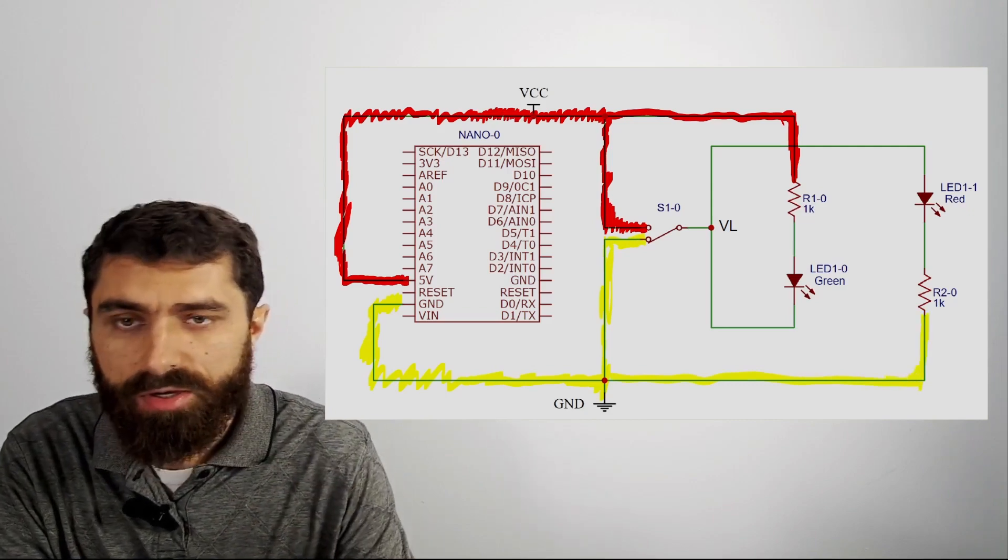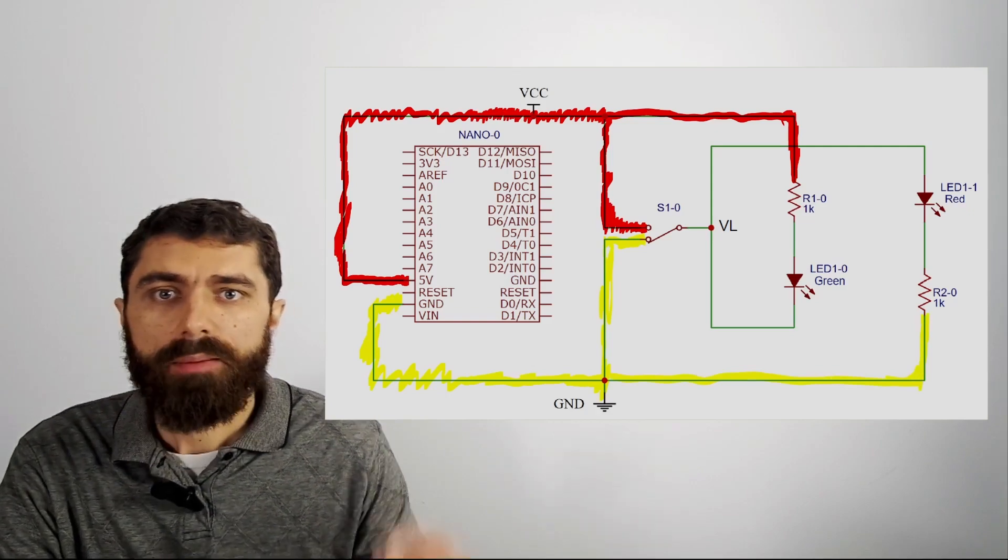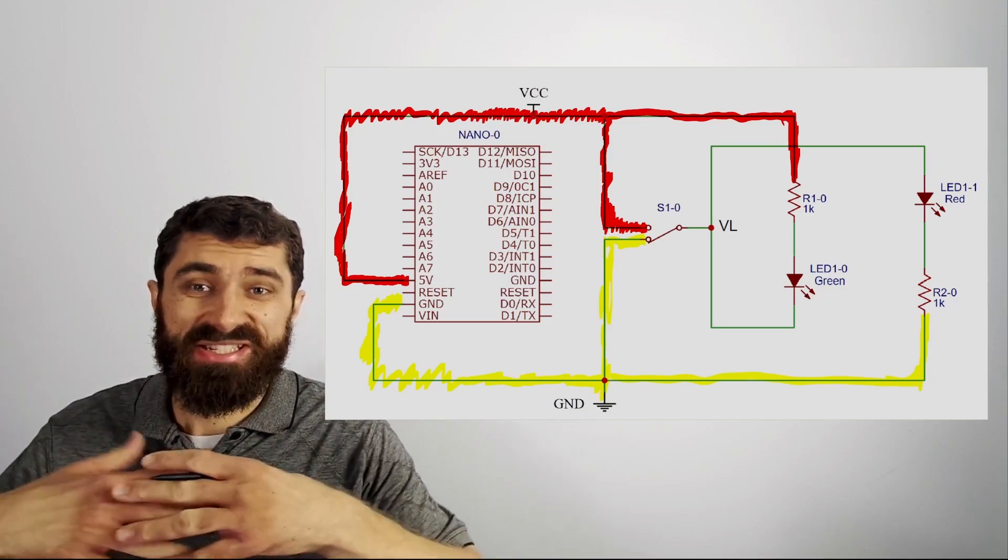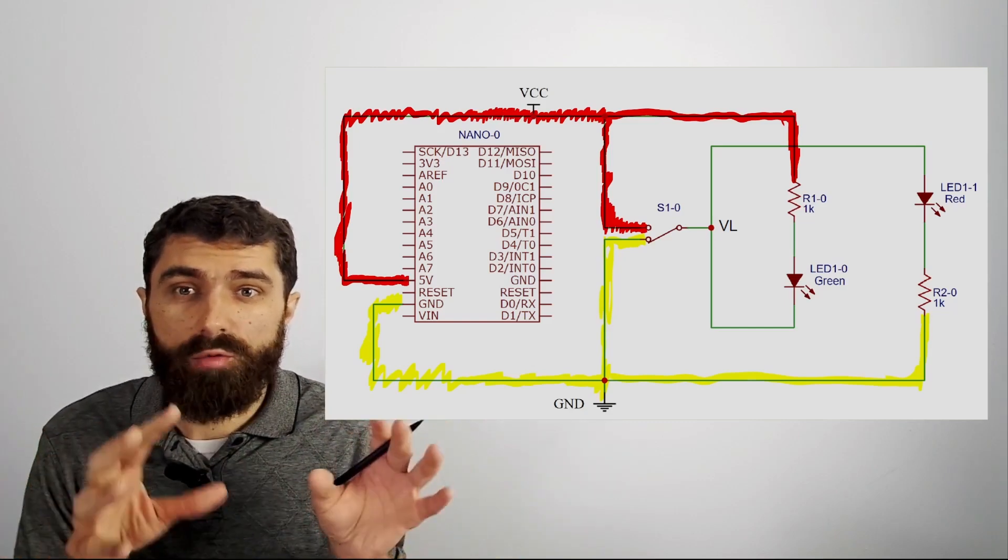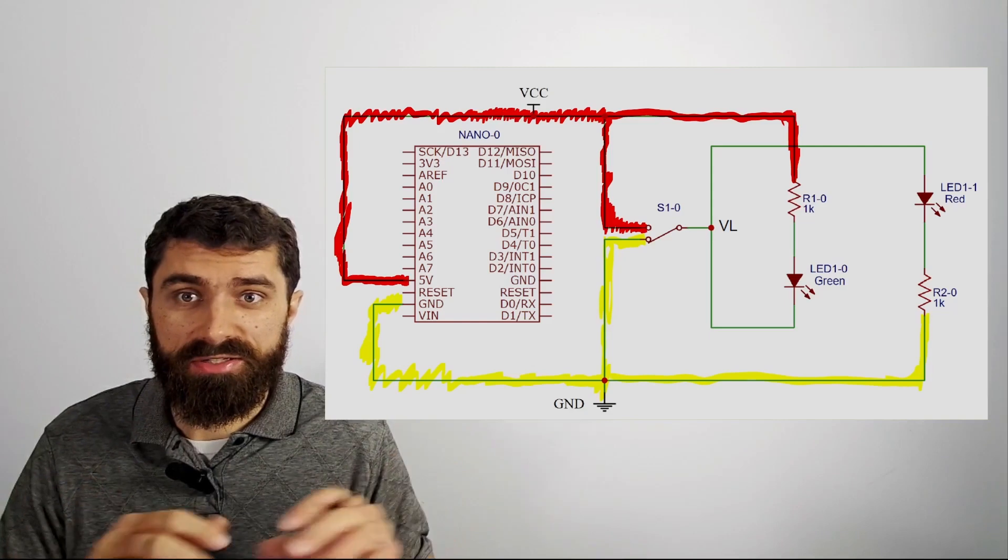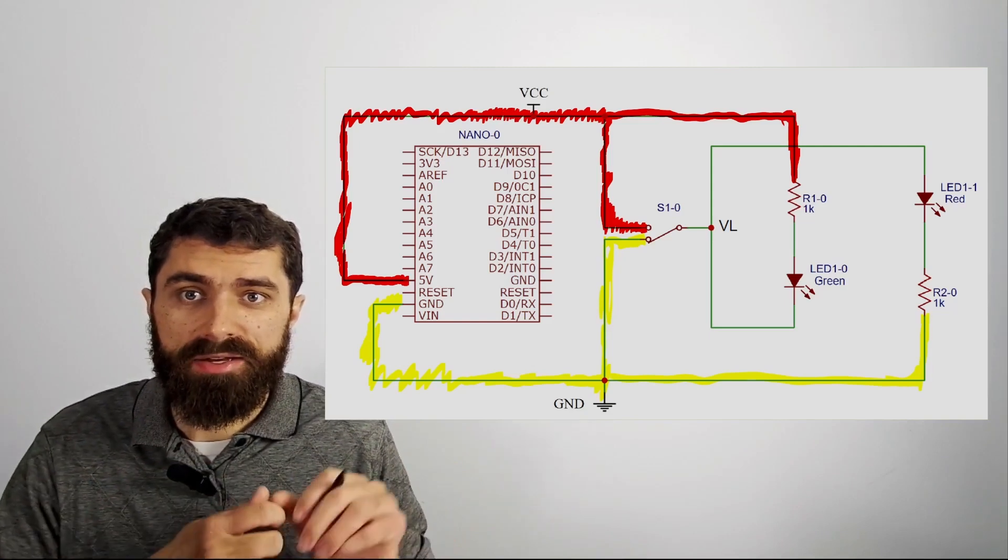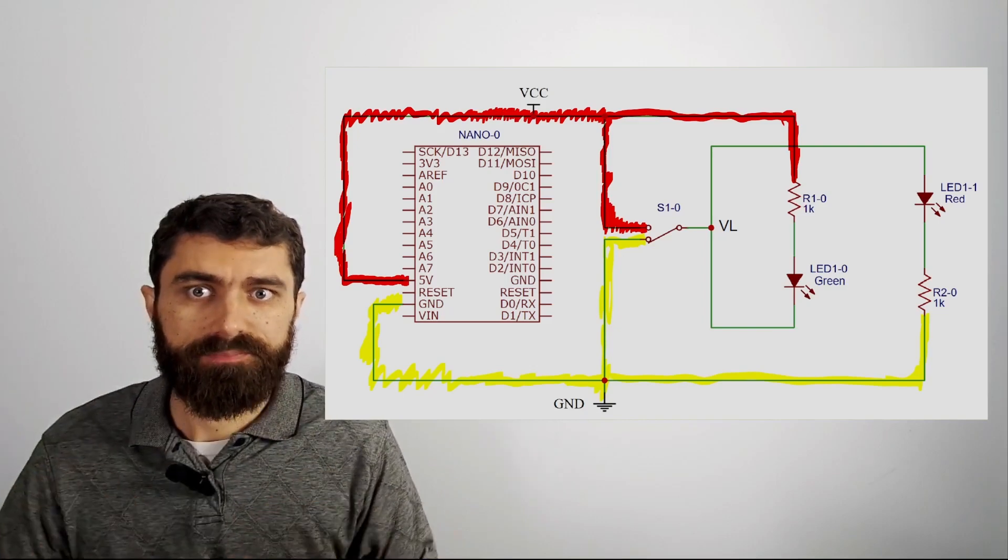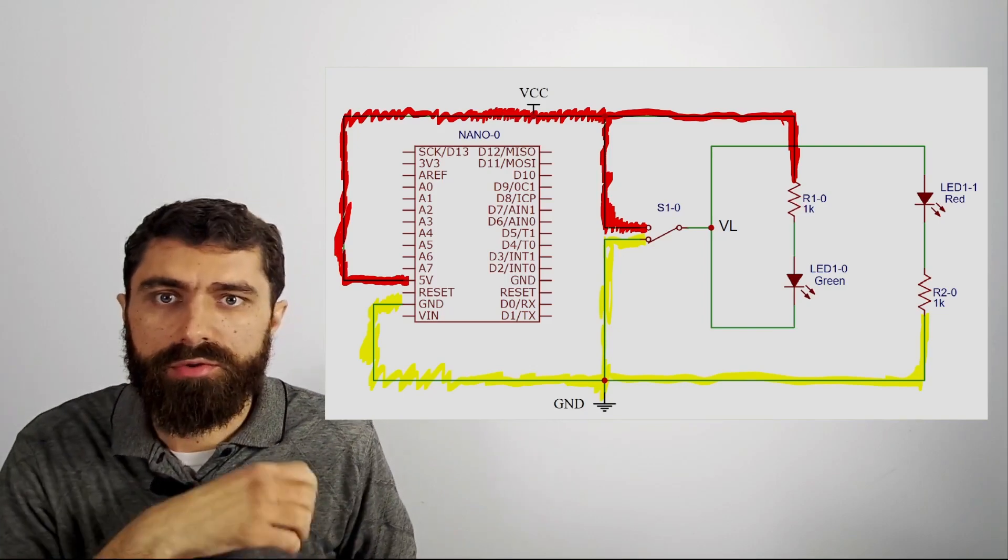So we could call that node two. Basically, you want to do the whole circuit until you have the entire circuit, all the wires of the circuit colored in different colors. And each one is a different node, and you can label that.